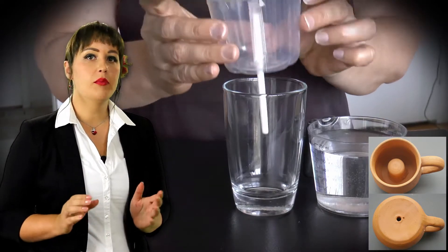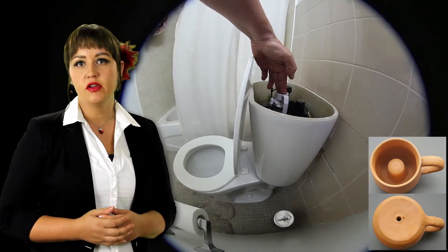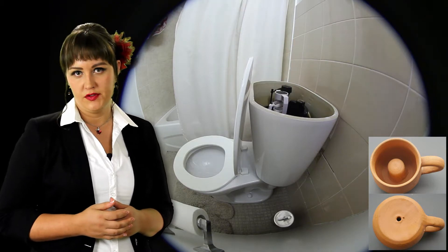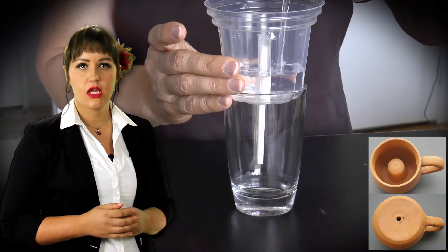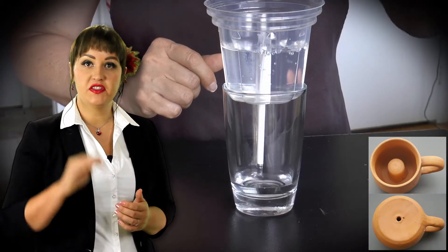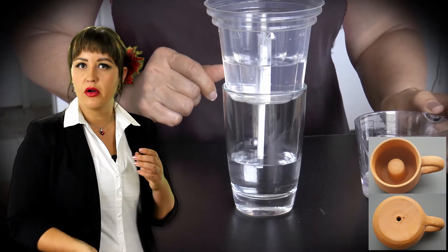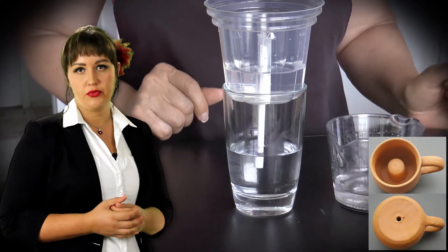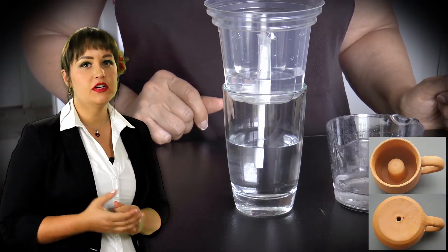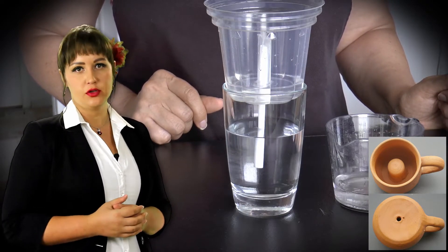The design and operating principles of a Pythagorean cup are similar to those in modern toilet bowls. If the liquid filling the cup is above the top of the pipe, it spills through the bottom of the cup due to hydrostatic pressure. If the liquid is below that level, one can use the cup in a conventional way.